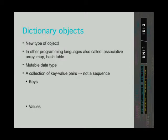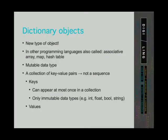For each key there is an associated value. Keys can appear at most once in a collection. Also, keys can only be immutable data types.